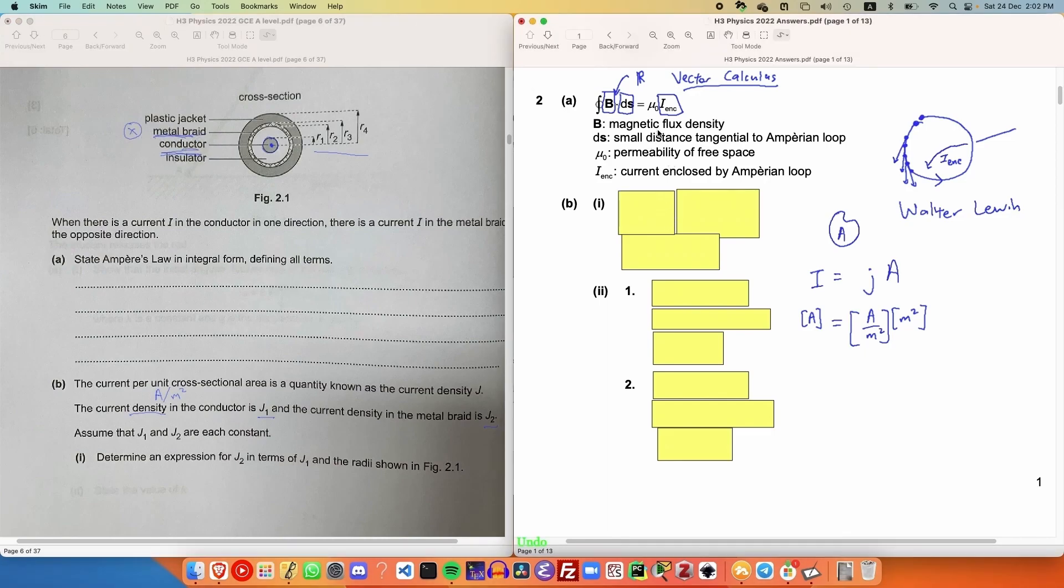In this case, the cross-sectional area of the conductor is just pi R1 squared, and the cross-sectional area of the metal braid is just the difference of two circles. Since I is the only unknown over here, we can just rearrange the first equation such that we express I in terms of the other constants, and then substitute it into the second equation, giving us this expression for J2 in terms of J1.